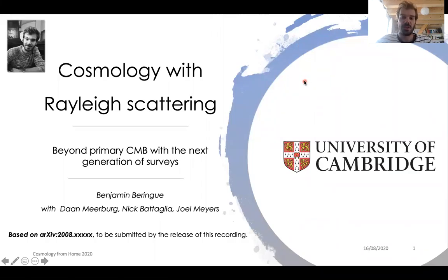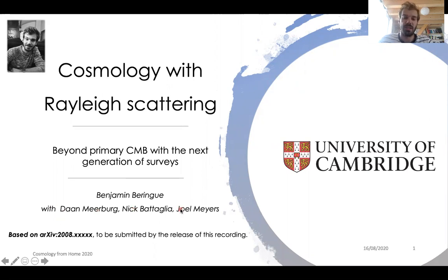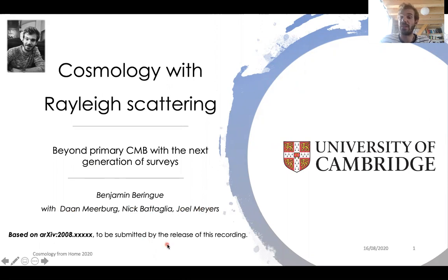Hi everyone, my name is Benjamin. I'm about to enter my final year as a PhD student at the University of Cambridge, and I would like to talk to you about a project we've been working on with my supervisor Dan Meerberg, together with Nick Bataglia and Joel Meyers. This project is about how we can do cosmology with Rayleigh scattering of the CMB. This talk is based on the paper we hope to put on the archive before the release of this recording, so if you want more detail about the analysis we carried out, I encourage you to have a look at this paper.